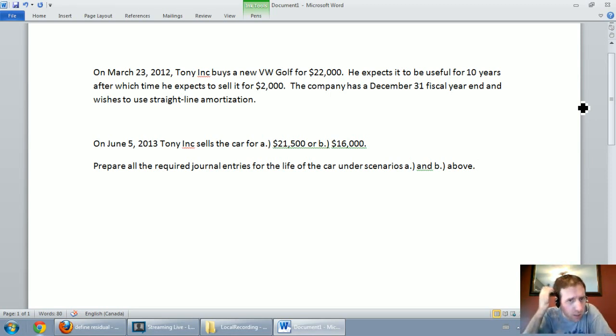So let's read through the question. On March 23rd, 2012, Tony Inc. buys a new VW Golf for $22,000. He expects it to be useful for 10 years after which time he expects to sell it for $2,000. The company has a December 31st fiscal year end and wishes to use straight line amortization. On June 5th, 2013, Tony Inc. sells the car for A: $21,500 or B: $16,000. Prepare all the required journal entries for the life of the car under scenarios A and B.